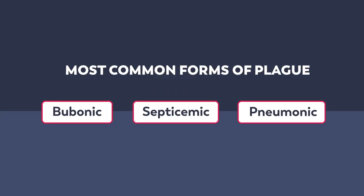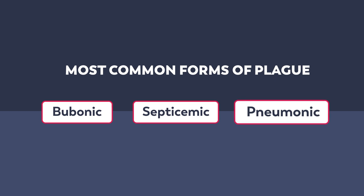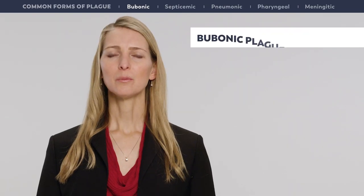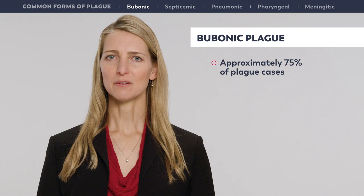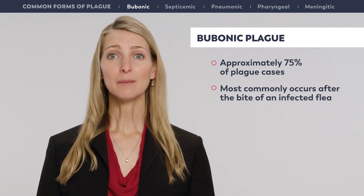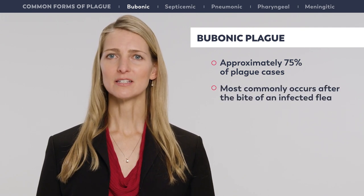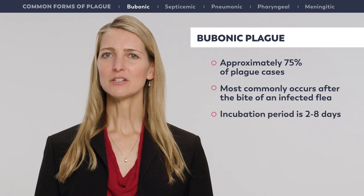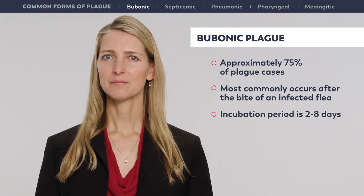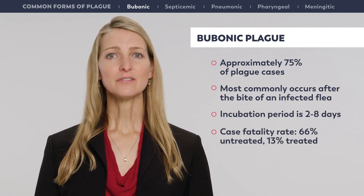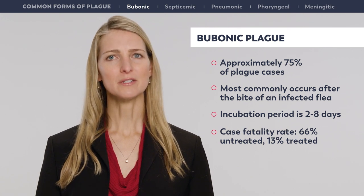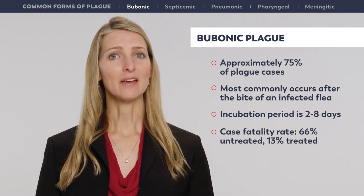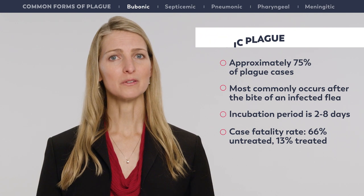The three most common clinical forms of plague are bubonic, septicemic, and pneumonic. Bubonic plague accounts for approximately 75% of plague cases and most commonly occurs after the bite of an infected flea. The incubation period is two to eight days. The case fatality rate is approximately 66% for patients who do not receive treatment and 13% for patients who are treated with antimicrobials.